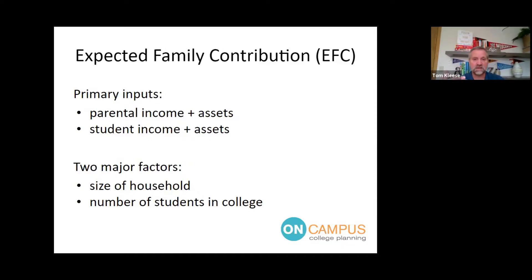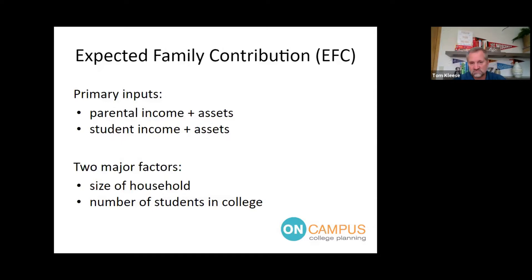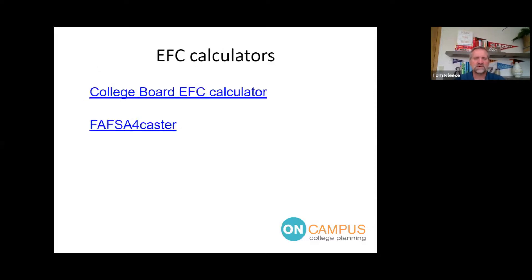The FAFSA asks parents how much they earn and what they have — not including retirement income or the value of your home. Students are also asked what they make and have saved. Two major factors that can affect your aid are the size of your household and how many of your kids are going to be in college at the same time, because that can really change your EFC number.